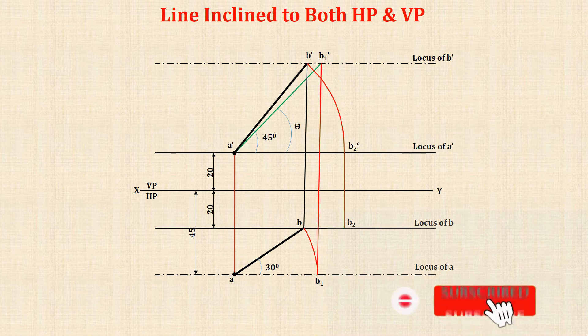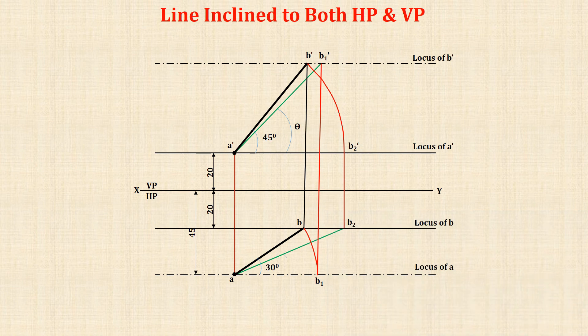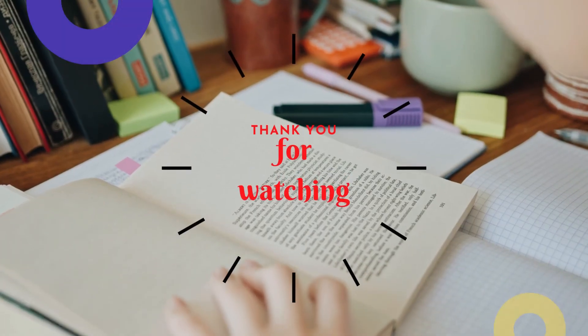Join a and B2 to find the inclination with respect to VP, that is phi value. So inclination with respect to HP and VP are 41 degrees and 26 degrees respectively. Thank you for watching this video.